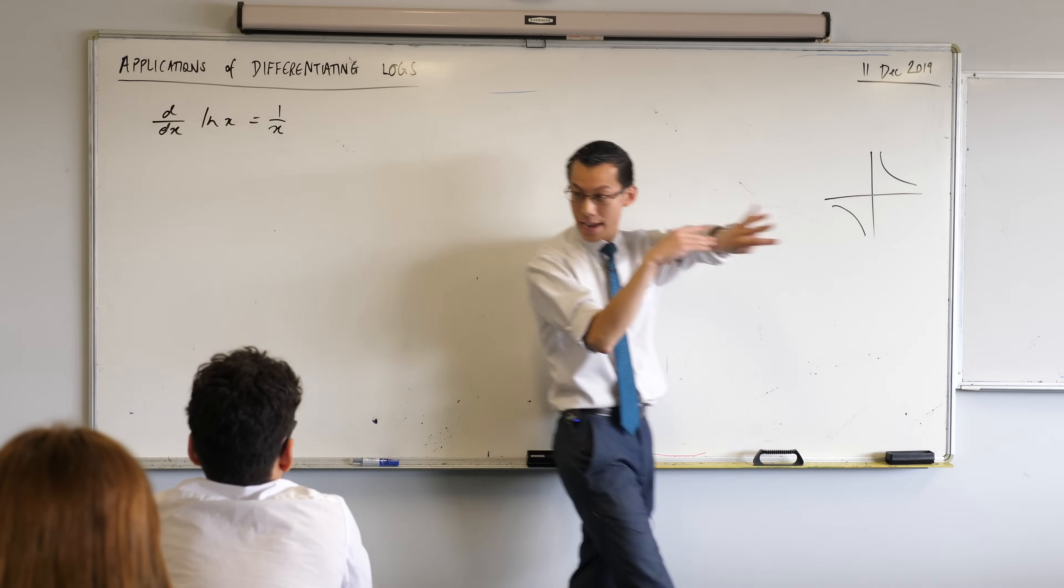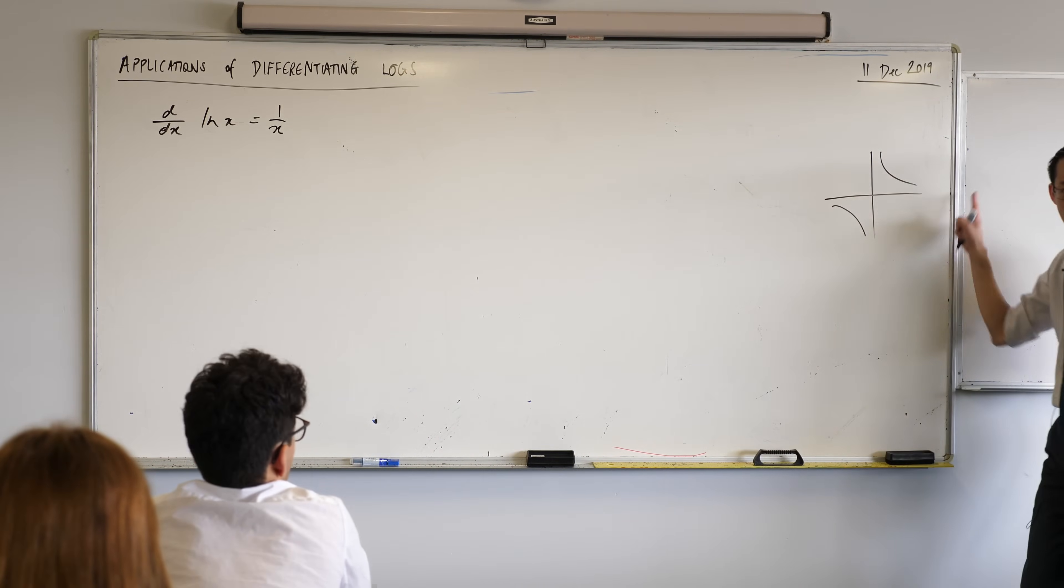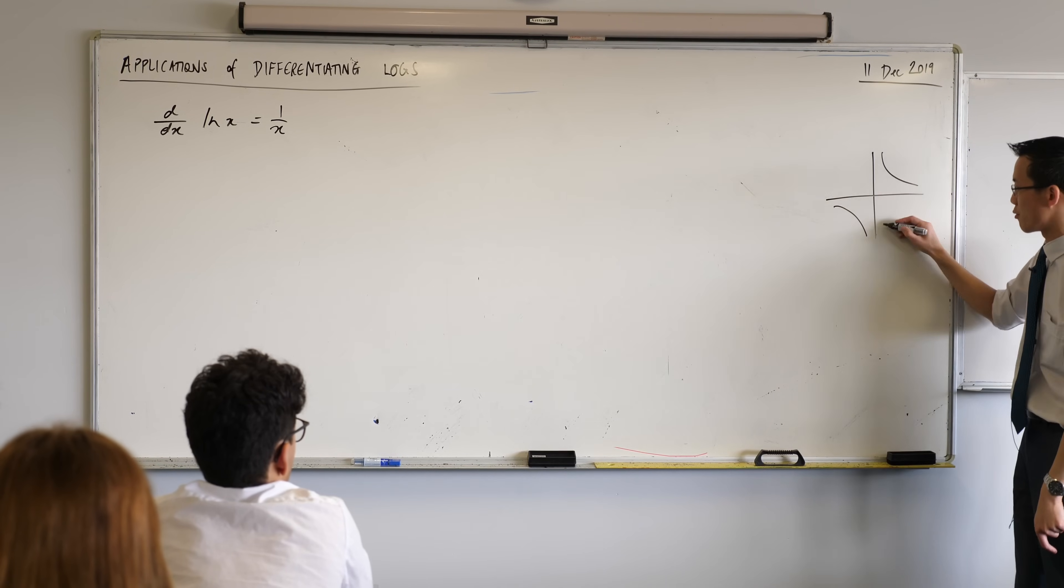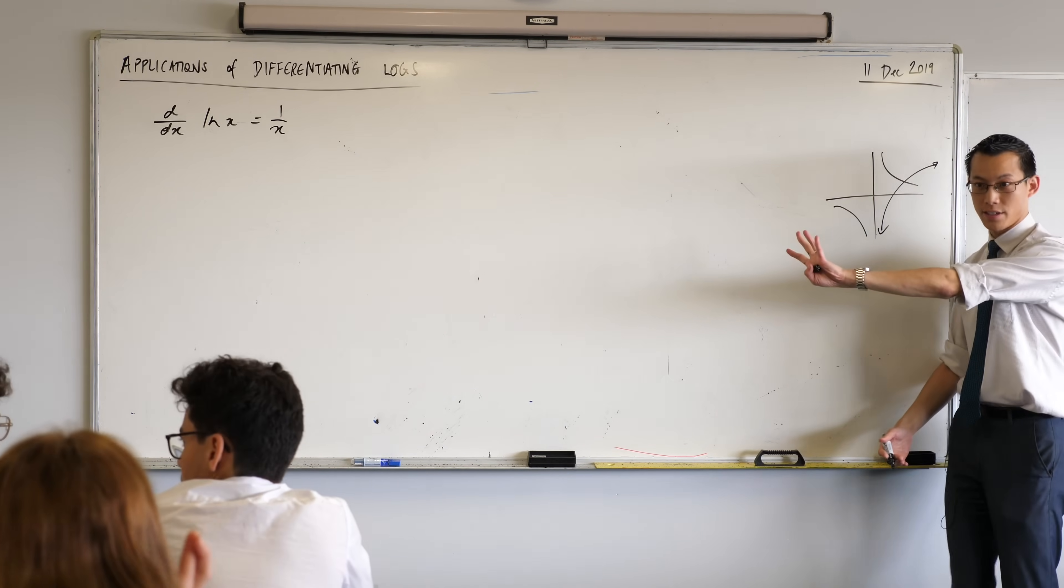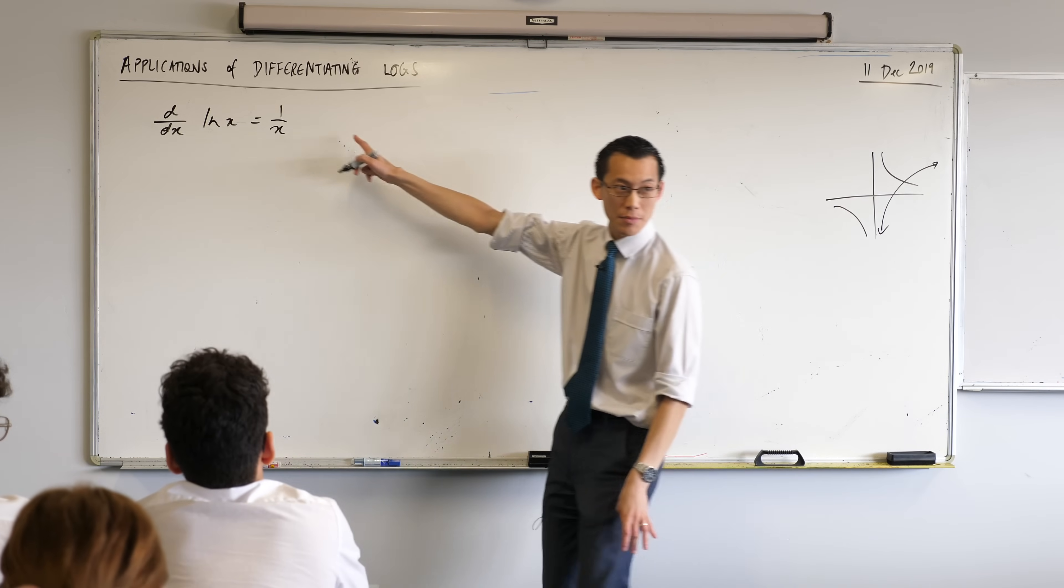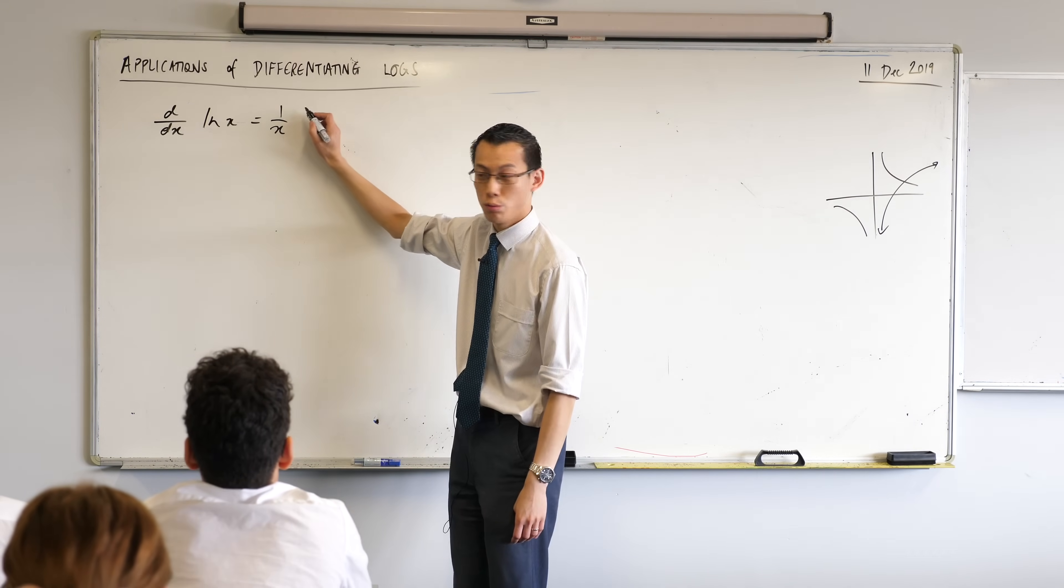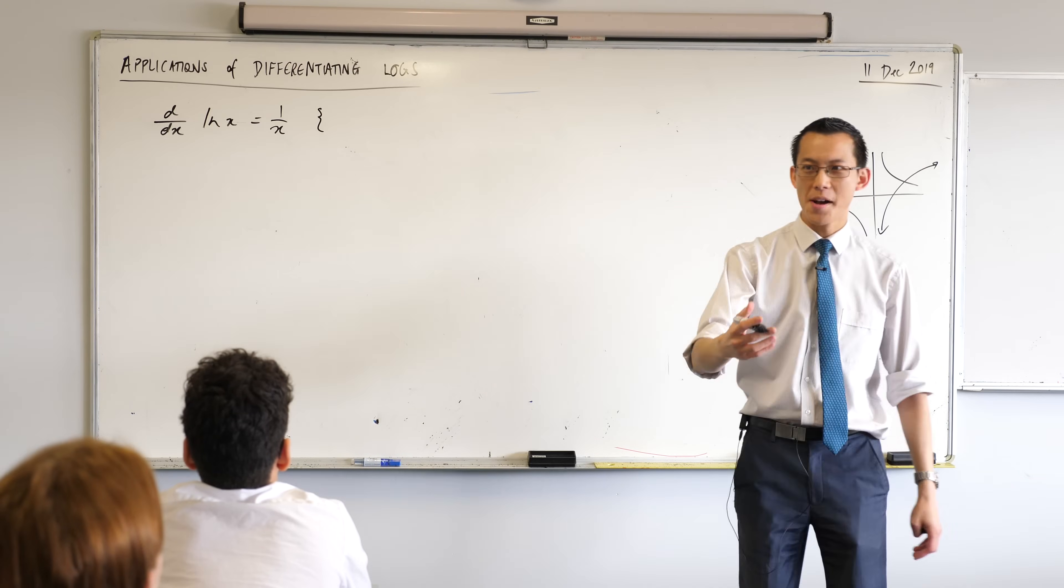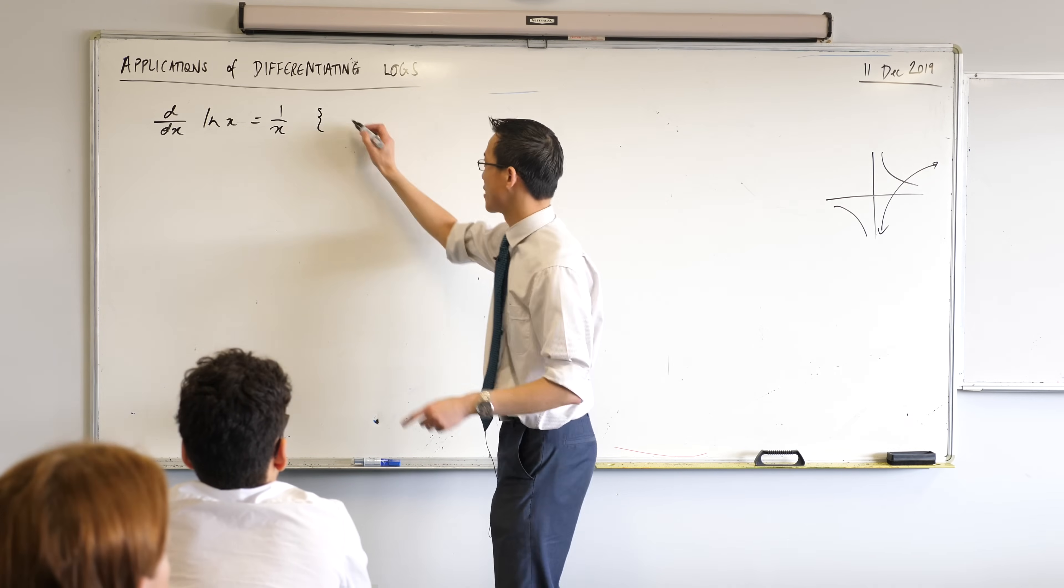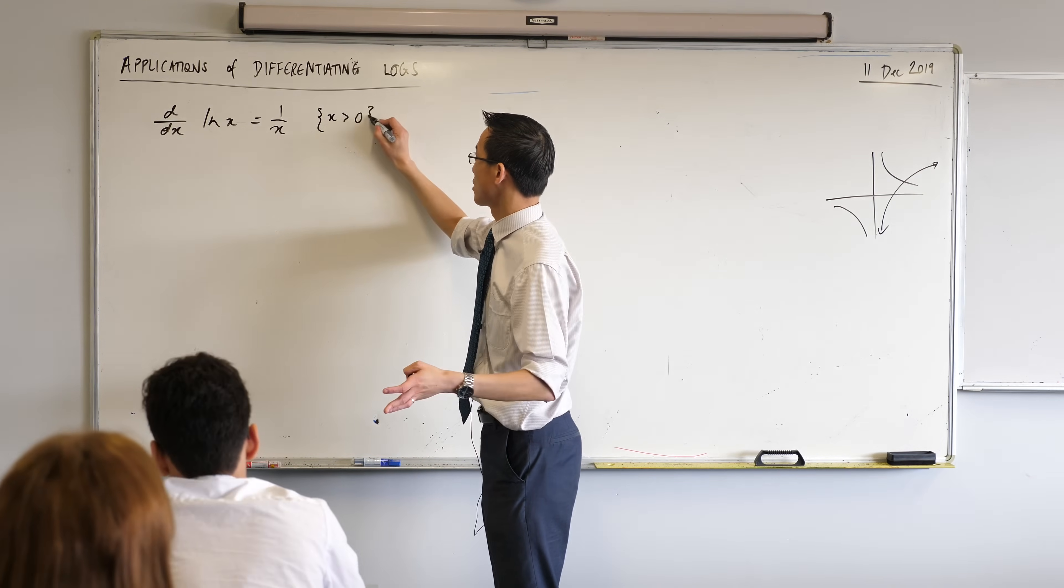Upper right. I want the part on the right-hand side, because this part over here is the part that is relevant to the log curve. Log curve doesn't exist for x is less than zero. So I actually need to add something on here. Do you remember what I need to include? I'll give you a clue. It starts with a curly brace. For x is greater than zero. And that's the domain constraint. Excellent.